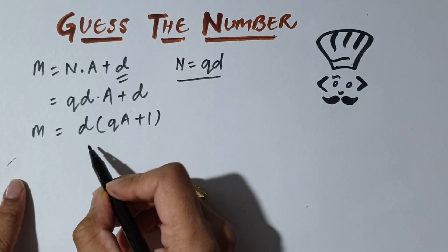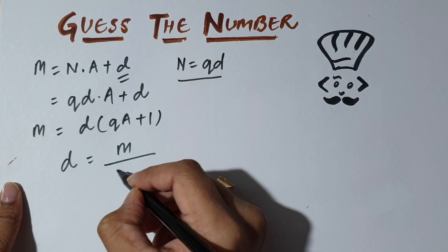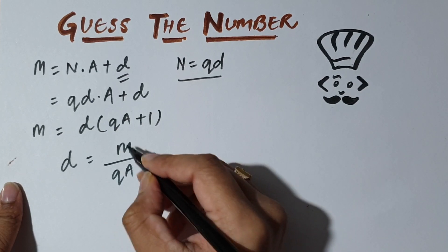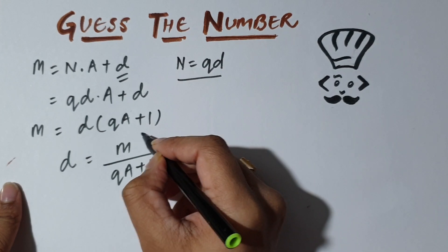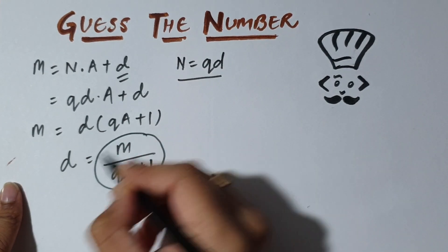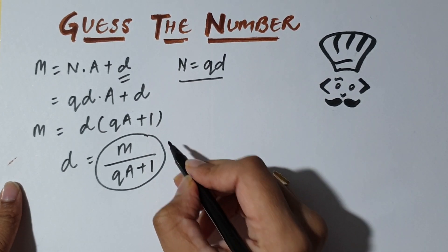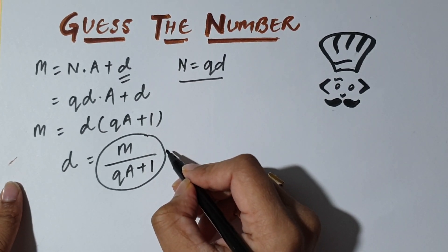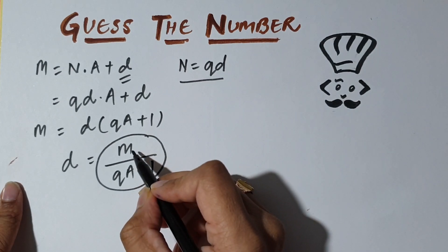Now we'll be using the fact that d is an integer. If d is an integer, so we can write d equal to M divided by (QA plus 1). So this also has to be an integer. And for this to be an integer, what should happen is that QA plus 1 should be a divisor of M.